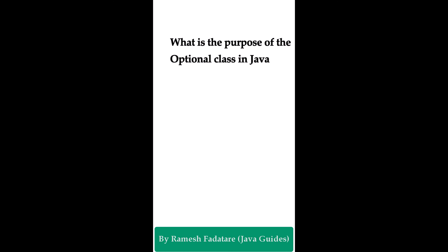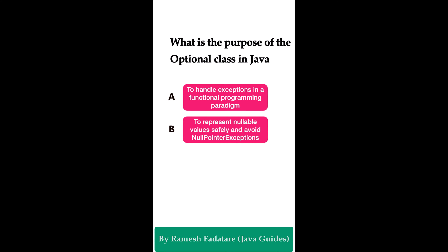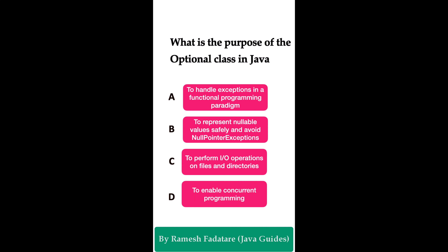What is the purpose of the Optional class in Java? Option A: to handle exceptions in a functional programming paradigm. Option B: to represent nullable values safely and avoid NullPointerExceptions. Option C: to perform I/O operations on files and directories. Option D: to enable concurrent programming. The correct answer is option B. The Optional class in Java 8 is used to represent nullable values safely and prevent NullPointerExceptions by providing a way to handle empty or null values. Optional was introduced in Java 8 specifically to handle NullPointerExceptions.